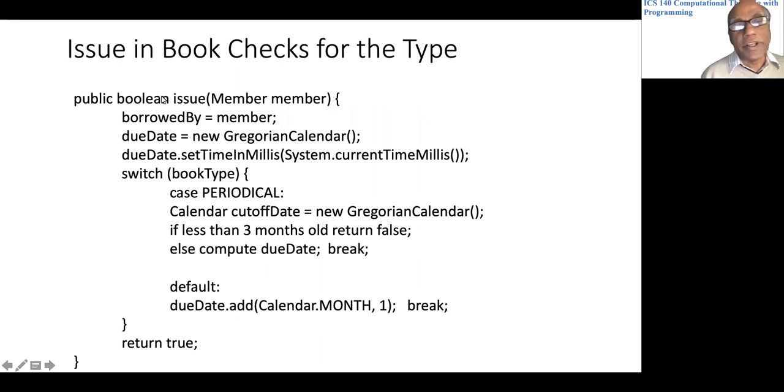Now we come to more interesting methods. Here is the issue method for issuing a book or a periodical. We set the borrowedBy field to the member who is borrowing the book. The due date is generated. Then we look at the bookType. If it is a periodical, we check if it is a new acquisition.